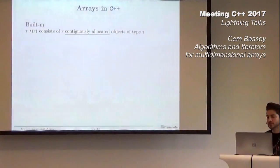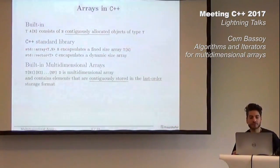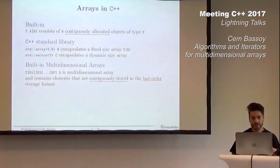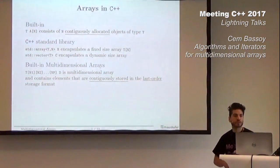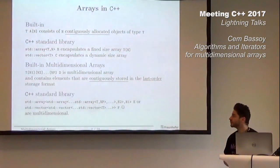It's contiguously allocated and you can use the standard library. C++ provides you with built-in types for multidimensional arrays. It's important that it's contiguously allocated so you can be efficient and access your elements very fast. It's stored in a row-major storage format.